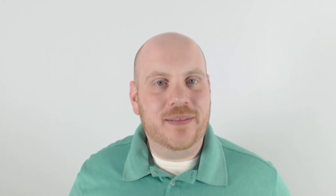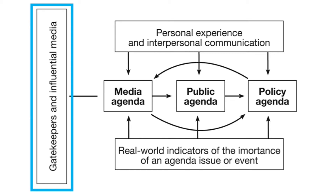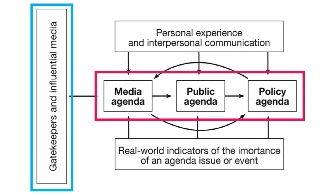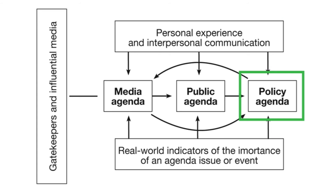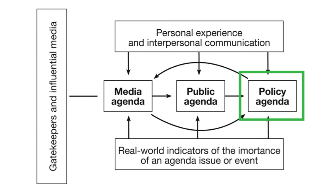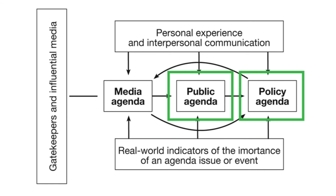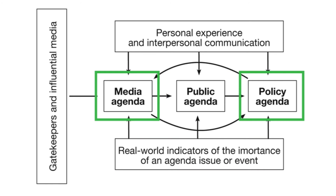Yes, that's a lot to take in, but I'll synthesize it for you. Basically, when we form an opinion on something, what steps happen? Well, first, we must know about the issue — that's where the gatekeepers come in. Once we know that the issue exists, each of these groups have their own personal experiences and realities to help set their agendas. However, these groups are also affected by the other groups. So, when a politician sets an agenda, it's influenced by their personal experience, reality, public opinion, and how the media frames the issue.